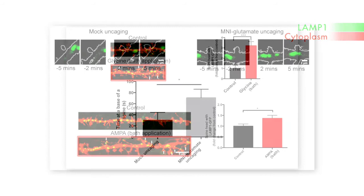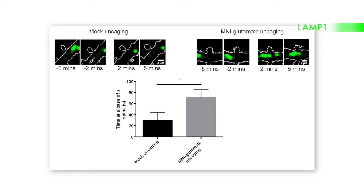Two different paradigms of stimulating neurons led to an increase in the number of LAMP1-GFP positive structures in the spine head. When glutamate was uncaged over a single spine, the researchers saw recruitment of these lysosomal structures to the base of those spines, and their dwell time at the base of spines was significantly enhanced.